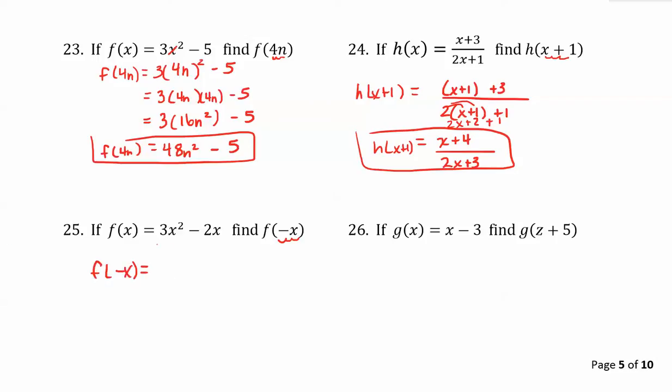Instead of 3 times x squared, we get 3 times what squared? Well that would be 3 times negative x squared. And then we have minus 2x becomes minus 2 times negative x. So squaring negative x, negative x squared is negative x times negative x, and that becomes positive x squared. So we have 3 times negative x squared is just 3x squared.